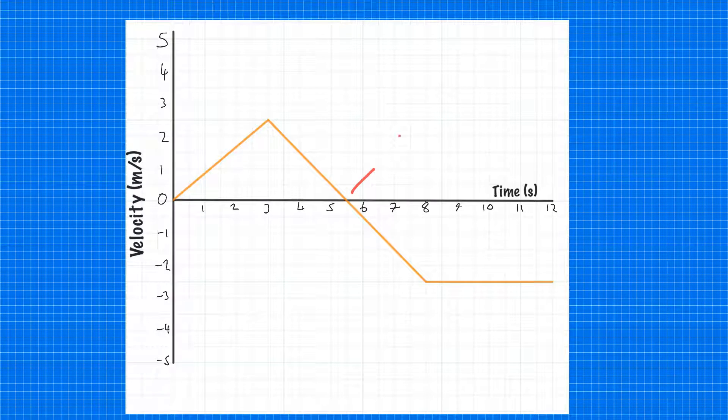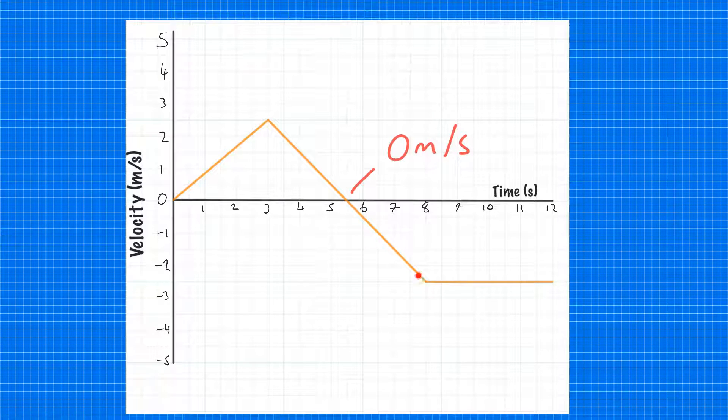At this point, it has a velocity of zero metres per second. It has stopped. When it goes beyond this point, its velocity is negative. Remember, velocity takes into account direction, not just speed.